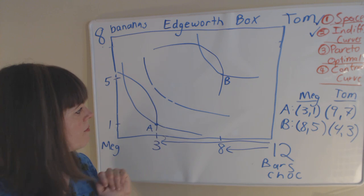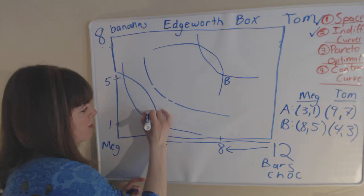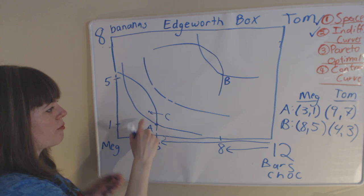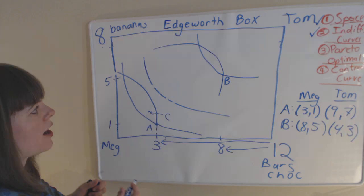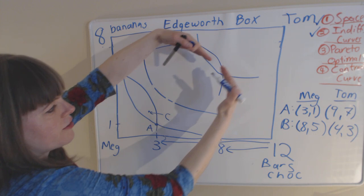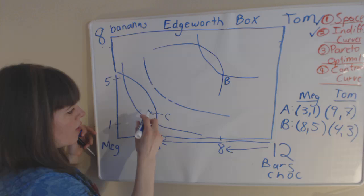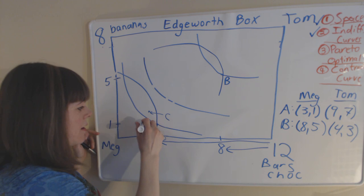And I actually know this isn't a Pareto optimal point because I can find another point right here, point C, that is better for both Meg. It's on a higher indifference curve for Meg and it's also on a higher indifference curve for Tom. We know Meg's indifference curves get better as we go in that direction and Tom's indifference curves get better as we come in this direction because this means Tom is getting more. So point C is better for both than point A. So A is definitely not Pareto optimal.